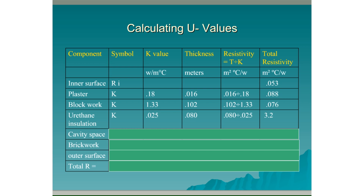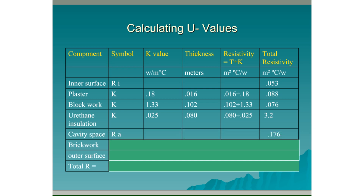The urethane insulation has K value 0.025 — much lower than the block work. The lower the K value, the more resistance it has to heat passing through it. The block work's K value of 1.33 allows heat to pass fairly quickly, whereas the insulation's K value of 0.025 means heat passes through it much more slowly. The insulation thickness is 0.080 m (80 mm): divide thickness by K value to get the total resistivity. The cavity space (symbol RA, air resistance) has a total resistivity of 0.176.